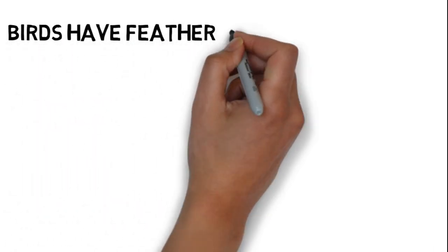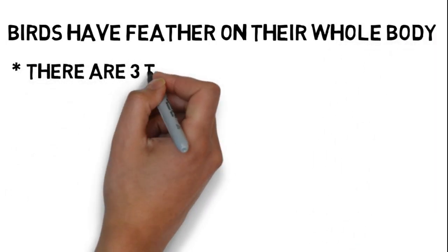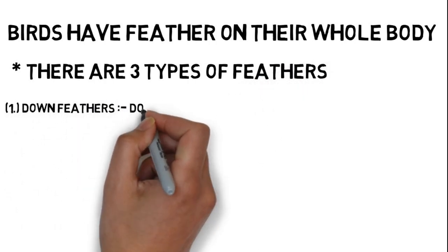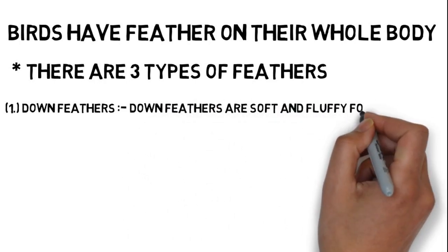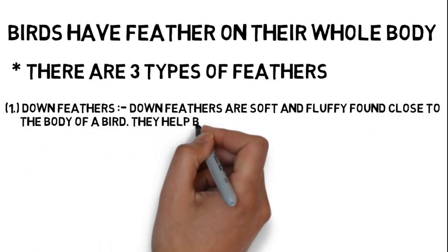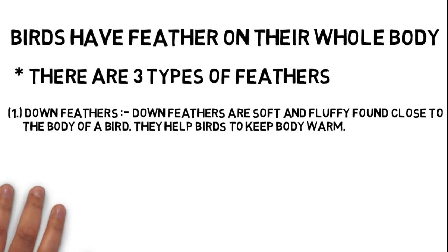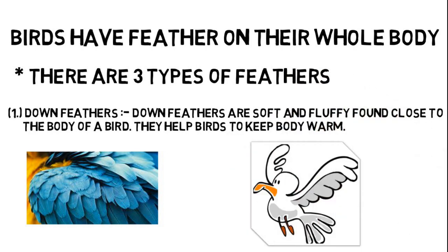Now let's understand types of feathers. There are three types of feathers. Number one, down feathers. Down feathers are soft and fluffy, found close to the body of a bird. They help birds keep their body warm.